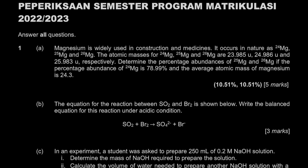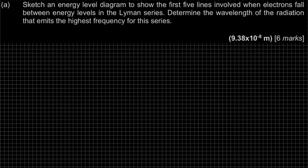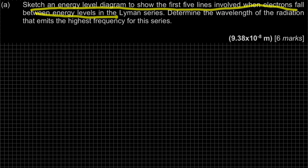Assalamualaikum and hello everyone. Welcome to the video where we will be discussing past year questions for the year 2022-2023. In this video, we are going to discuss question number 2 involving chapter 2, atomic structure. Question A: sketch an energy level diagram to show the first 5 lines involved when electrons fall between the energy levels in the Lyman series.